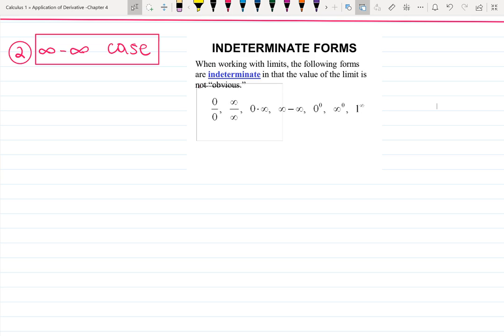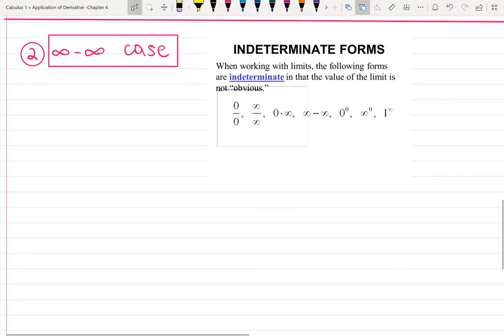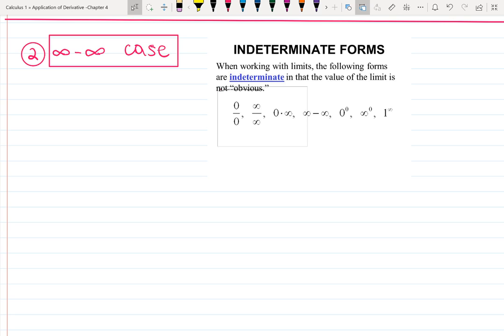Hello everyone! Let's keep going with more cases of indeterminate forms. We already covered 0 over 0, infinity over infinity, and 0 times infinity, which basically takes us to the two previous cases. In this video, let's cover the case infinity minus infinity.